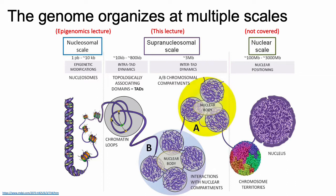It also turns out that entire chromosomes don't randomly distribute themselves around the nucleus. Certain chromosomes are known to have preferences for particular locations within the nucleus, and even at a macroscopic level, chromosomes tend to segregate into different regions known as chromosome territories.